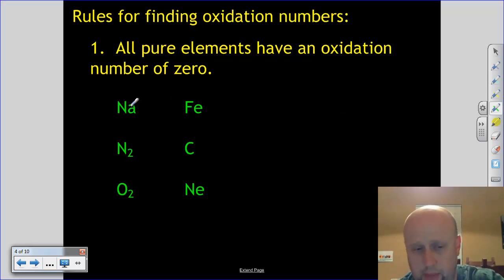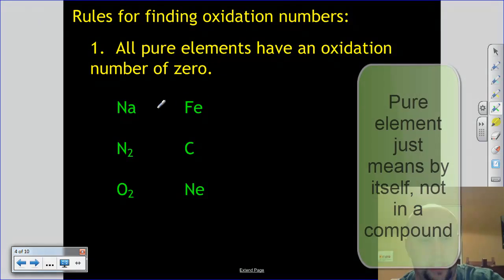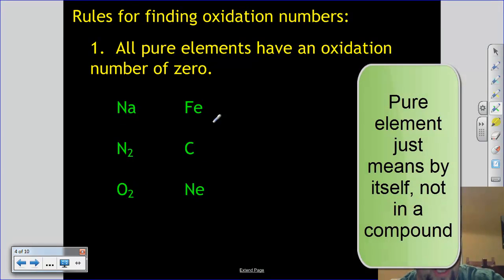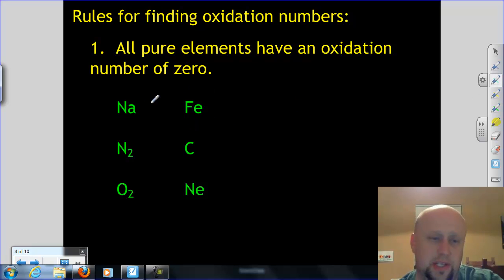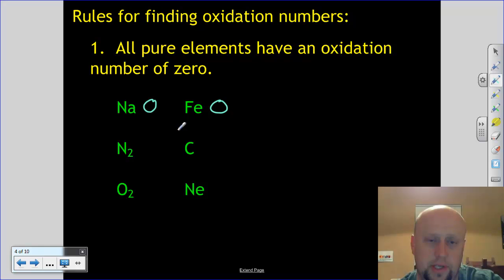Now, by pure element, I mean it's an element with nothing else in it. It's an element by itself, and it doesn't have a charge on it. If it has a charge, it's not a pure element. It's an ion, and that's something different. So what that means is for each of these cases, my oxidation number is zero.